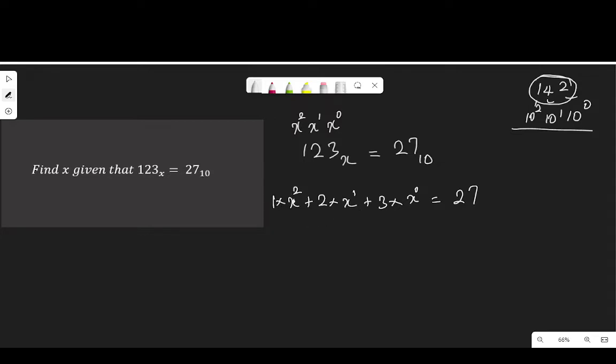Then 1 multiplied by x to the power of 2 is x to the power of 2 plus 2 multiplied by x to the power of 1 is 2x. Plus anything raised to the power of 0 is 1. 3 times 1 is 3, equal to 27. Sorry, my plus looks like multiplication because my graphic tablet is a bit turned.